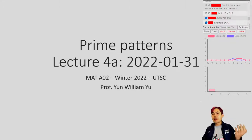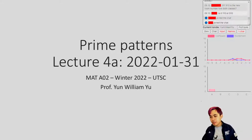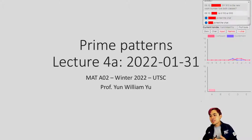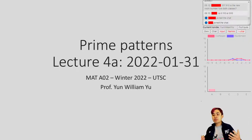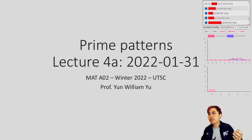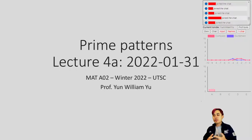Welcome back to MATAO2. We're going to be talking about prime patterns today. Last time we talked about prime numbers - those are numbers that are only divisible by one and themselves, and we were using them as multiplicative building blocks for all the numbers. By using the prime numbers, you can multiply them together and get every single other number. Today we're going to talk about why this is really, really cool.